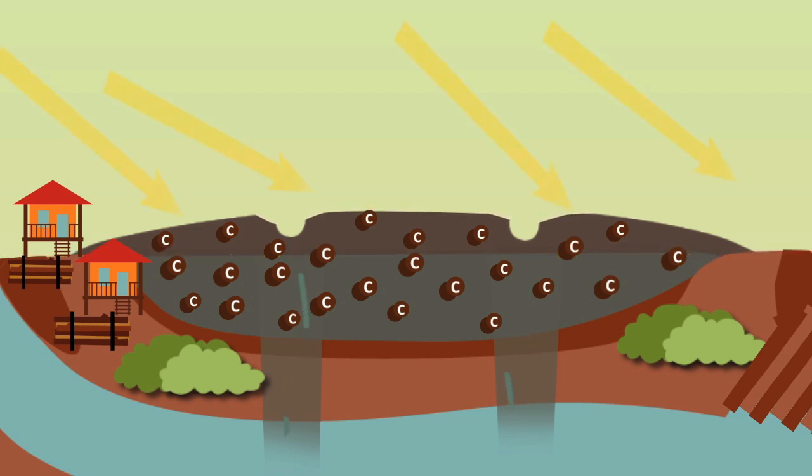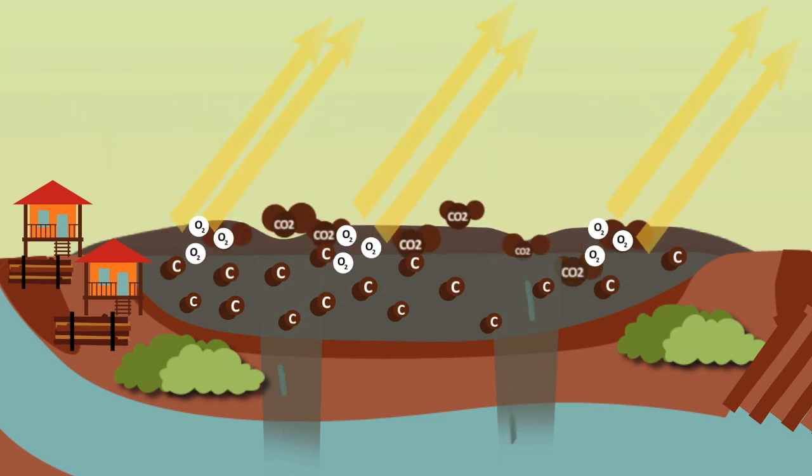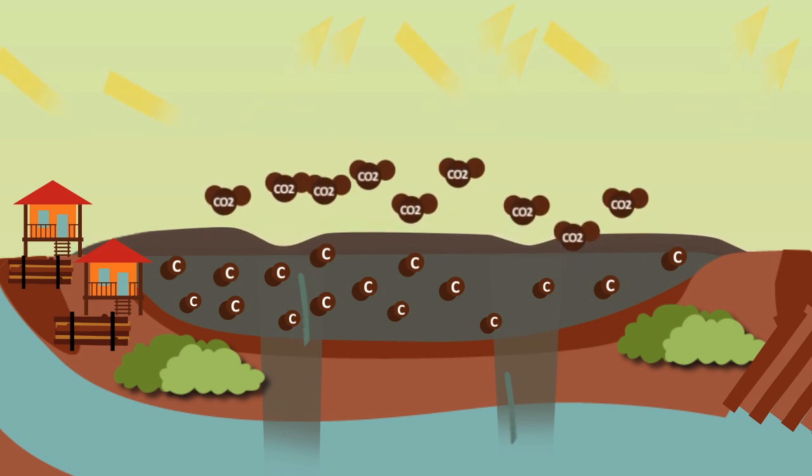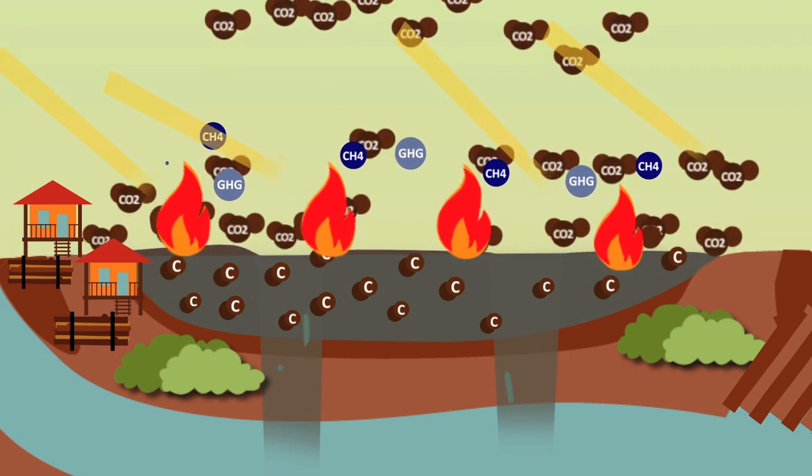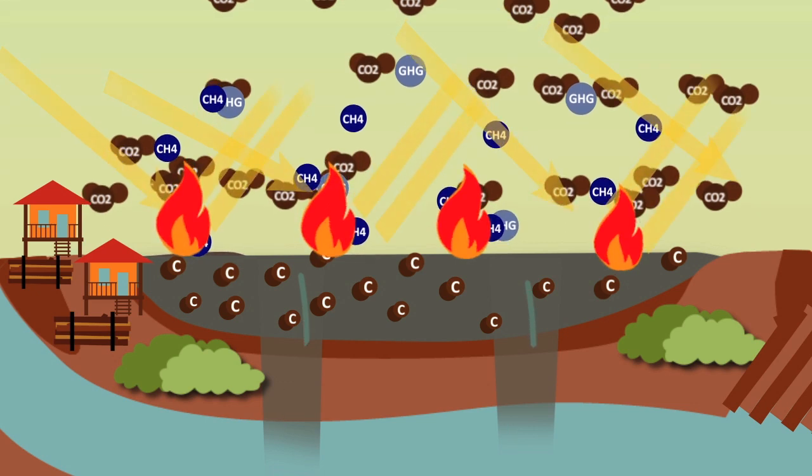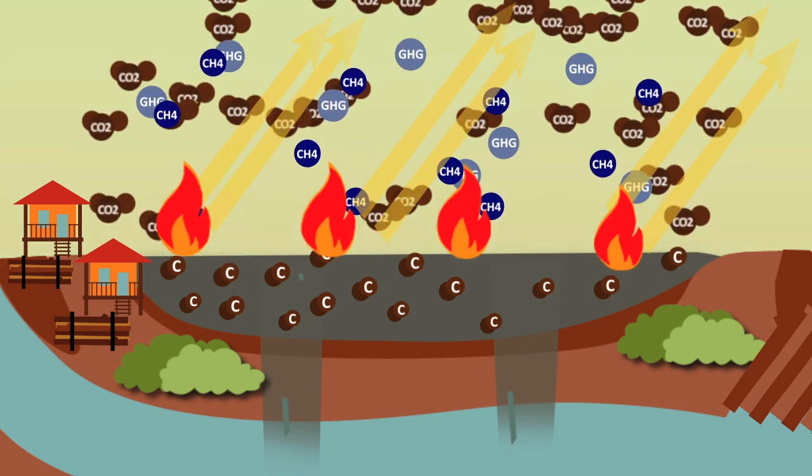The added elements of sunlight and oxygen cause the release of carbon dioxide. Seasonal peat fires further accelerate the process, sending vast amounts of carbon dioxide and other greenhouse gases into the atmosphere.